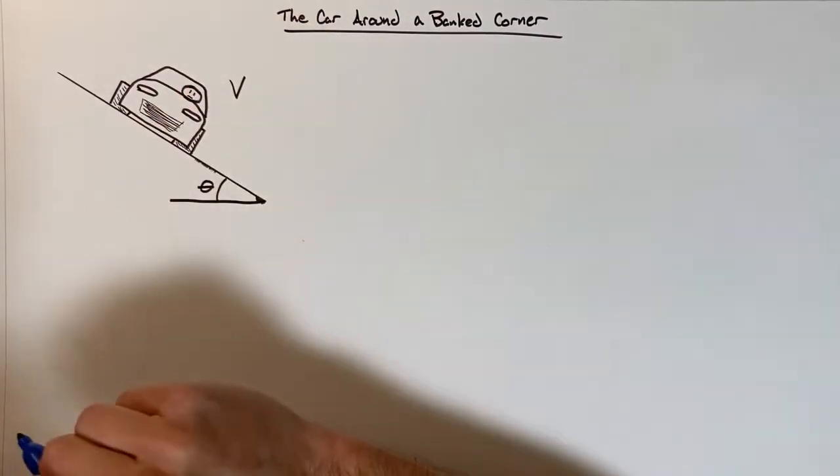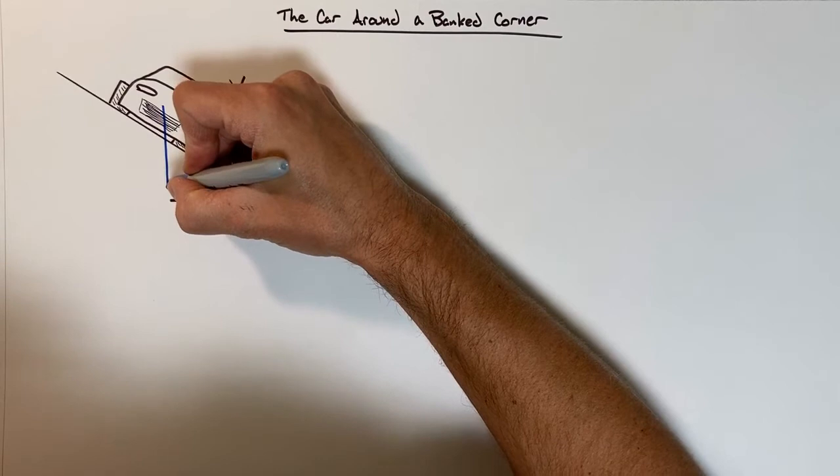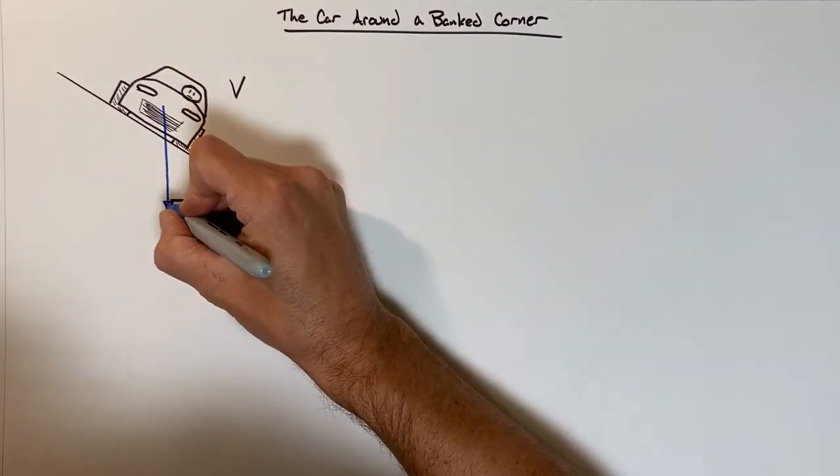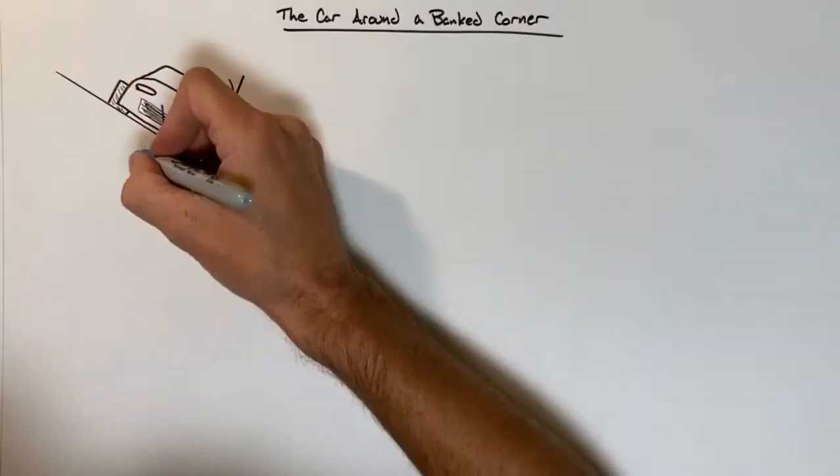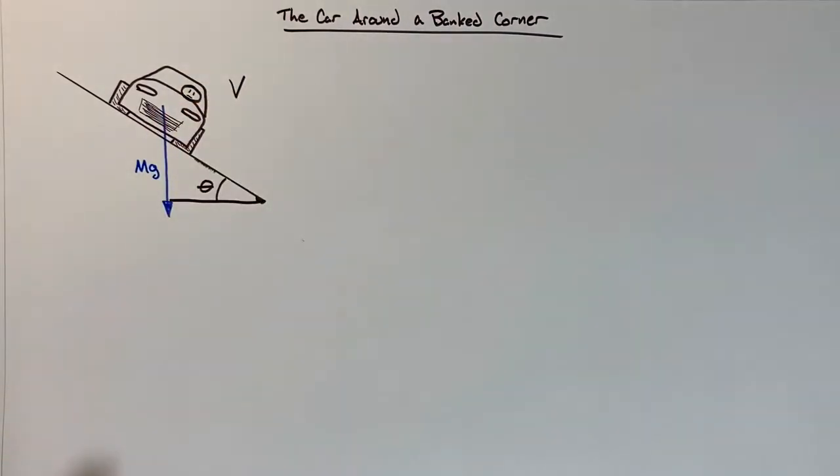People go through and they correctly say there's gravity acting on this car—that's non-negotiable. We say the weight of the car, the force by gravity, is straight downward and it is mg.